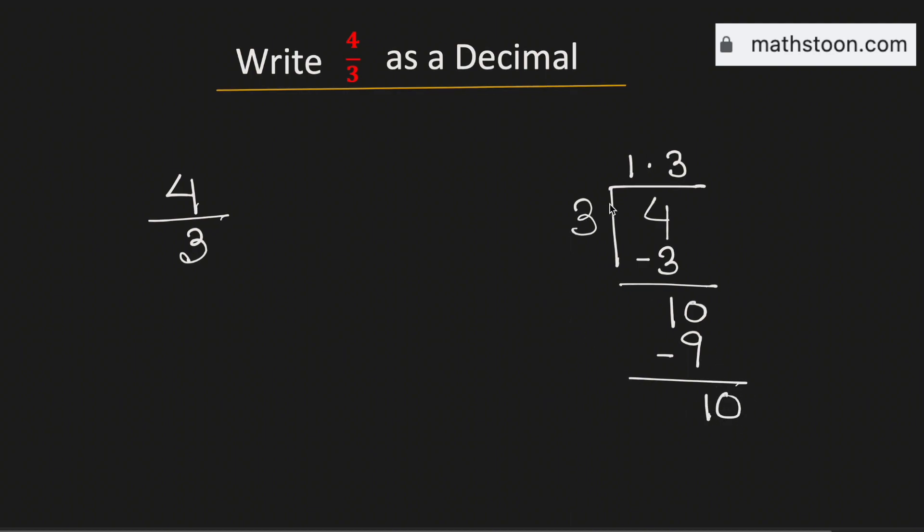Now put a 0 here. We know that 3 times 3 is 9. Subtract, we are getting 1. So this way we are getting 4 over 3 as 1.333 and so on.